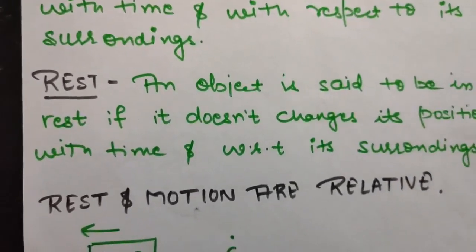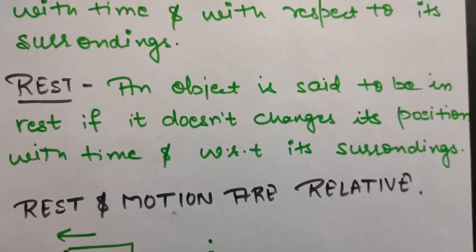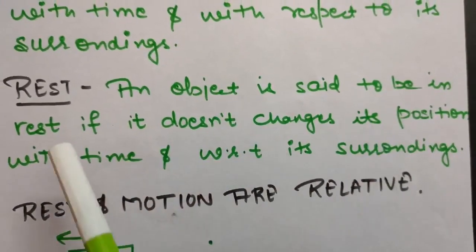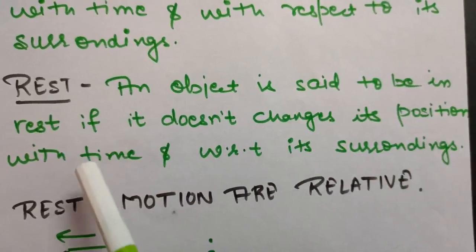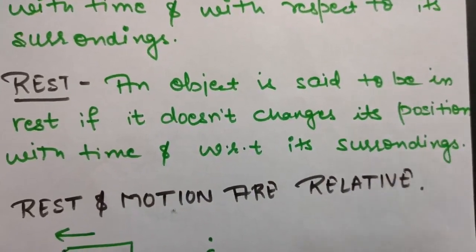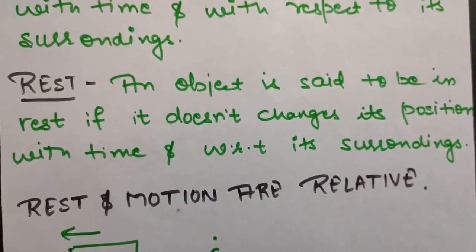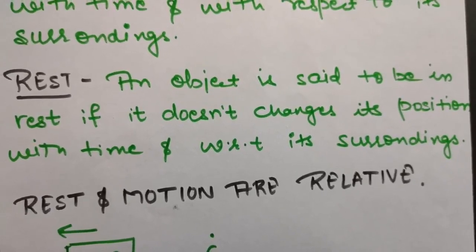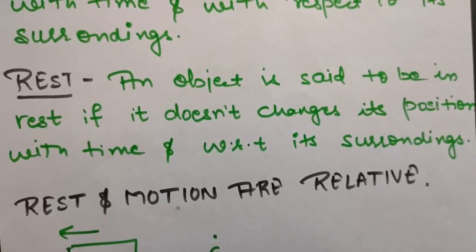Next is rest. Rest is nothing but the opposite of motion. An object is said to be in rest if it does not change its position with time and with respect to its surroundings. For example, a stationary car that is not changing its position with time will remain at rest.